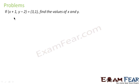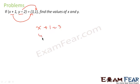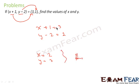Let's solve a problem. If (x+1, y−1) = (3, 1), find the values of x and y. Since two ordered pairs are equal, the first element must equal the first element and the second element must equal the second element. So x+1 = 3 and y−1 = 1. Solving gives x = 2 and y = 2. You just need to know that the first element of one set equals the first element of the other, and likewise for the second elements.